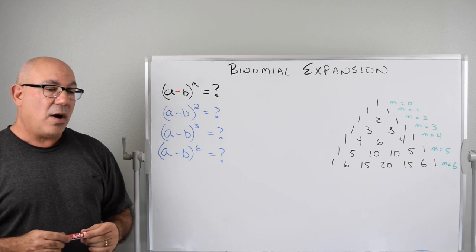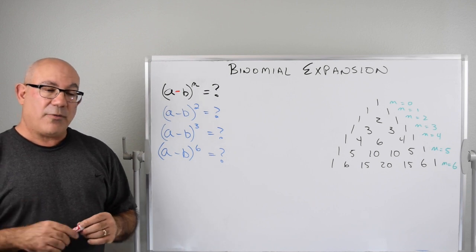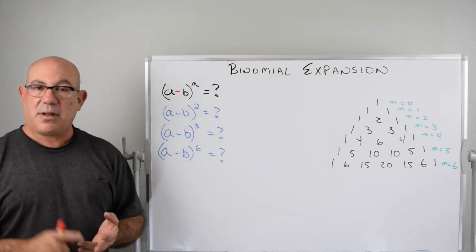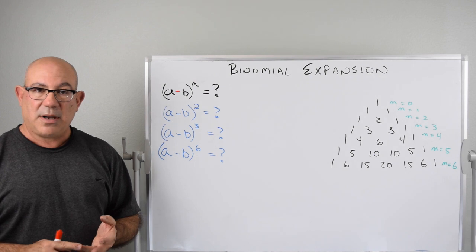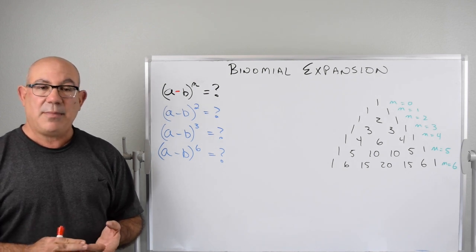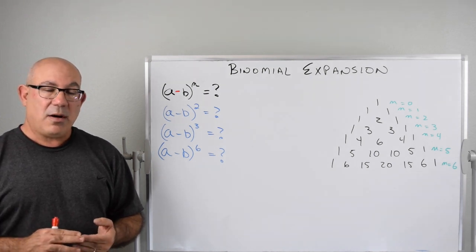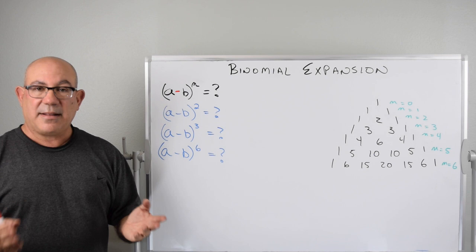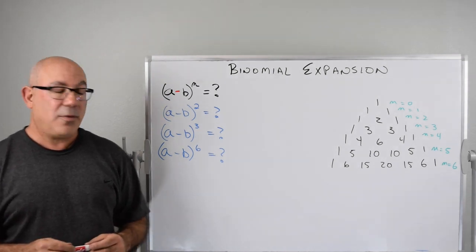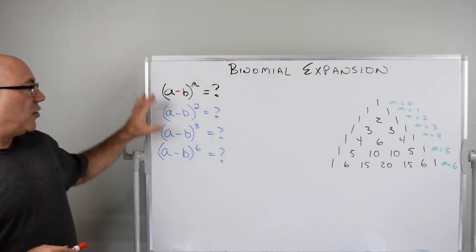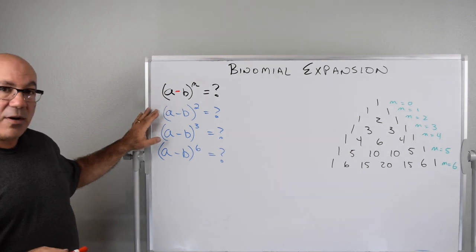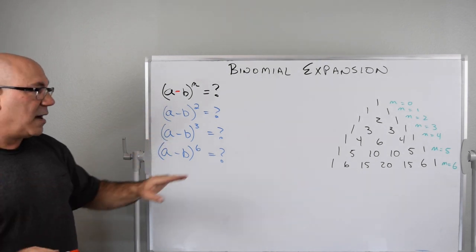Before we get into that, we invite you to subscribe to our channel, click the notification bell, leave us comments and feedback, and like the video if you find it helpful. Let's start with (a minus b) squared, but first we need to modify Pascal's Triangle.